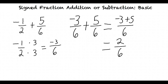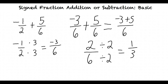Is 2 over 6 the final answer? This answer is technically correct. However, it is always best to check if the fraction can be simplified. We want to rewrite it using smaller numbers, which is called reducing the fraction. To reduce, we find the greatest common factor of the numerator and the denominator and divide both by that number. The greatest common factor is the biggest number that both can be divided by. In this case, 2 is the largest number that both 6 and 2 can be divided by. So we divide them both by 2: 2 divided by 2 is 1, and 6 divided by 2 is 3. Therefore, our final simplified answer is 1 third.